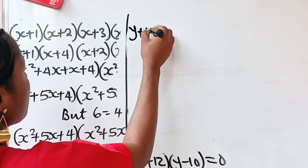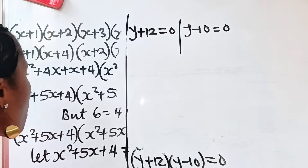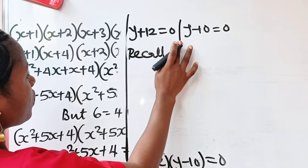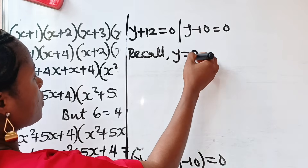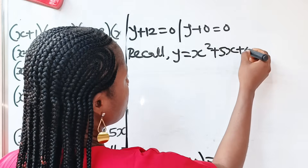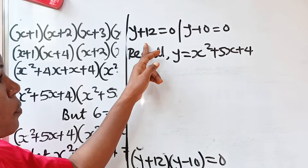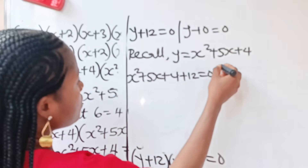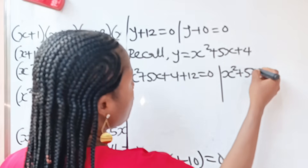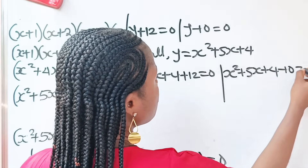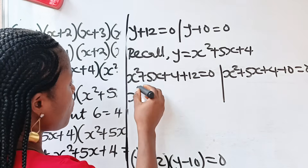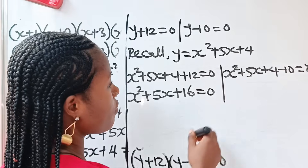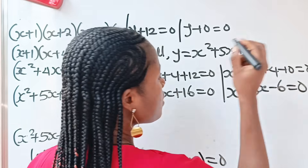This means either y plus 12 equals zero, or y minus 10 equals zero. Recall that y equals x squared plus five x plus four. Substituting back: for y plus 12 equals zero, we get x squared plus five x plus four plus 12 equals zero, which simplifies to x squared plus five x plus 16 equals zero. For y minus 10 equals zero, we get x squared plus five x plus four minus 10 equals zero, which gives x squared plus five x minus six equals zero.